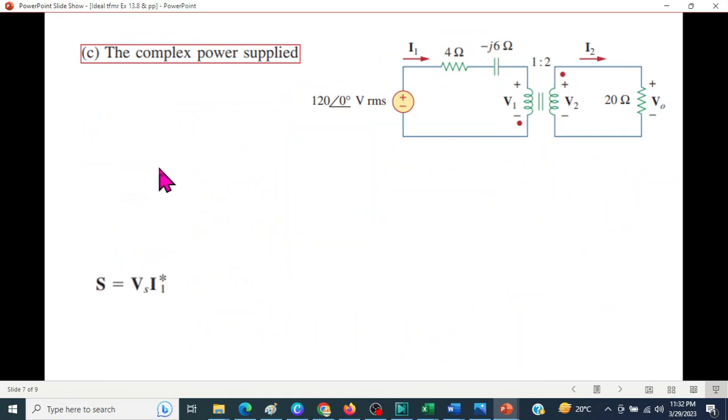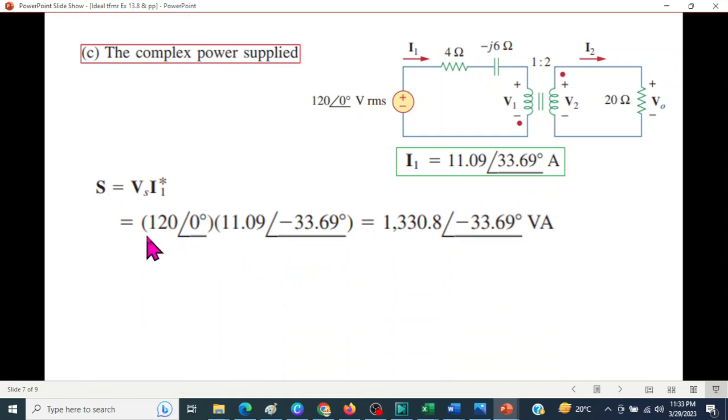Now, the complex power. We have learned the power formula. I hope you remember. It is Vs I1 or V in I in, whatever you call it. In our case, Vs or Vsource is 120. I1 also we had calculated. This is I1. The only thing we have to change is because of this conjugate, we have to change the sign of the angle. 120 current angle sign changed. This is the answer. We can convert this into KVA. This is the answer in KVA.